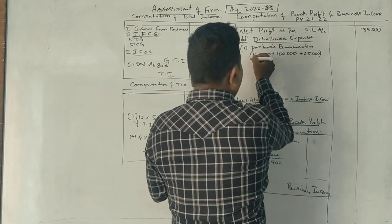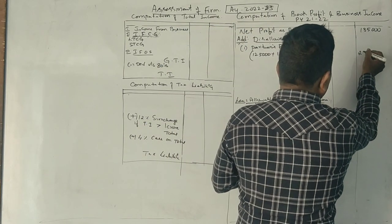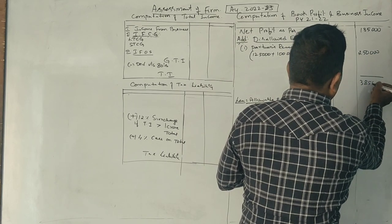Total: 1,25,000 plus 1,00,000 plus 25,000 equals 2,50,000. So the total remuneration is Rs. 3,85,000.